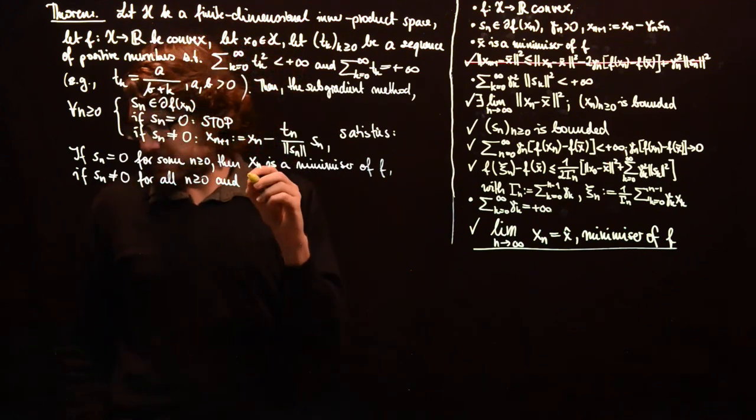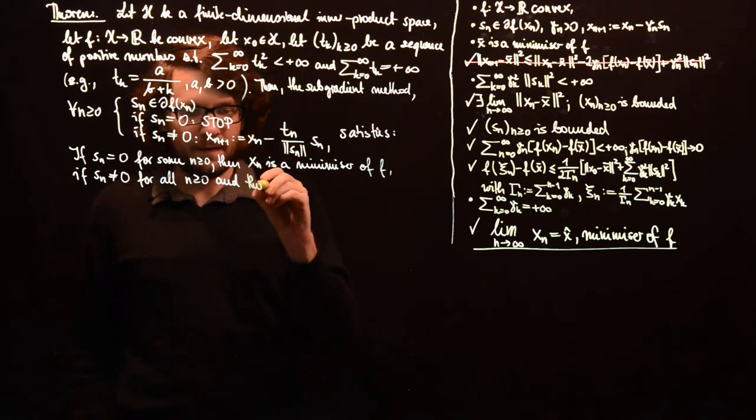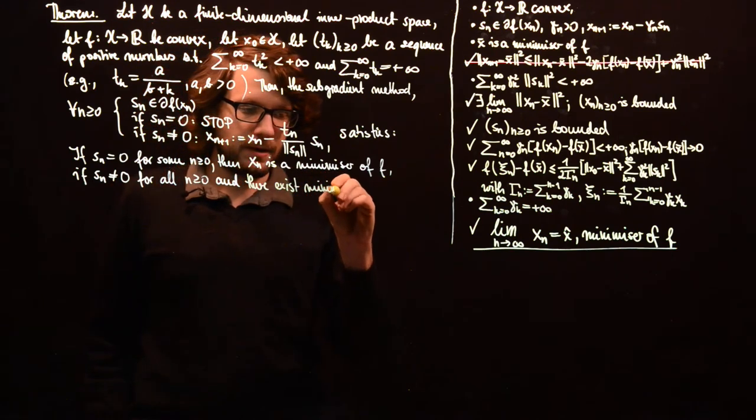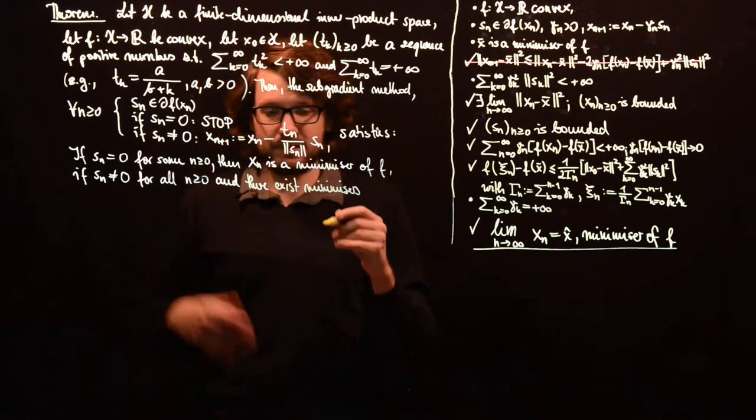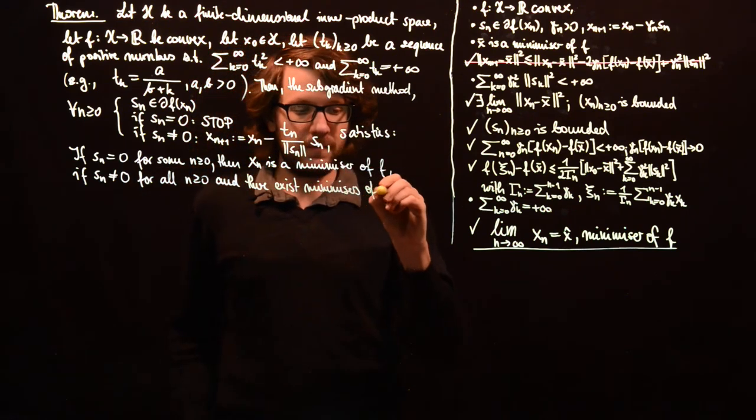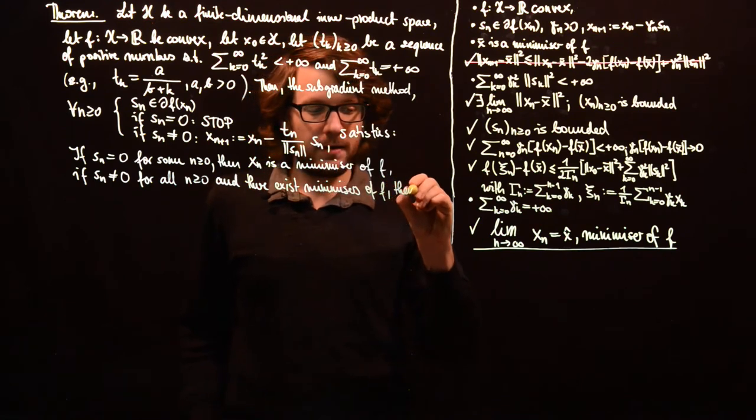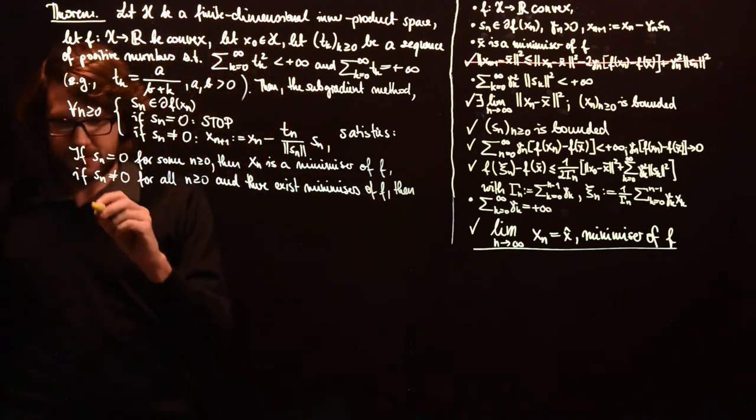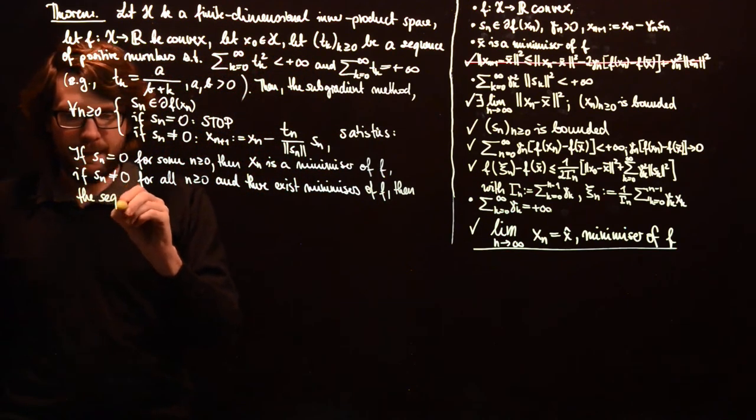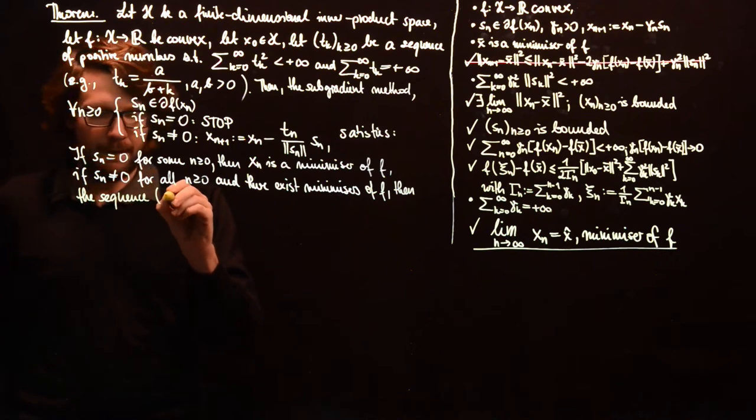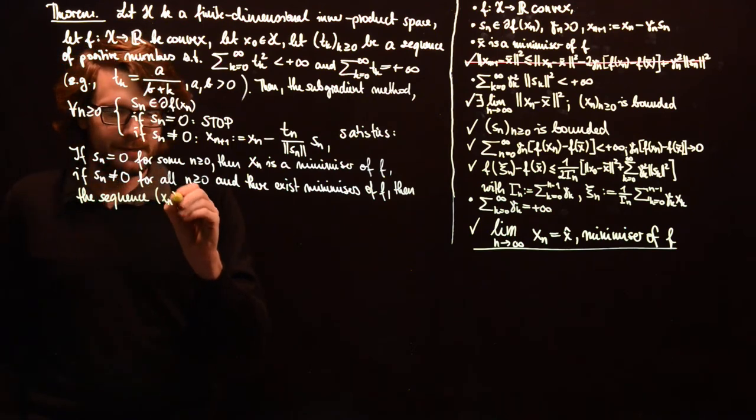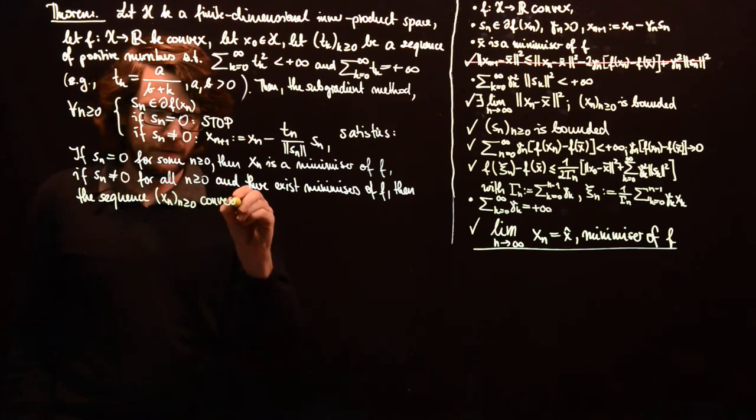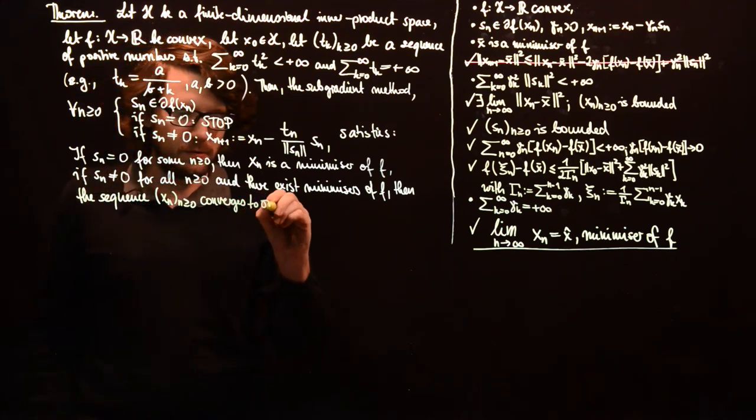If such a minimizer exists, so if there exists minimizers or any minimizer of f, then we have shown that the sequence x_n converges to one of them.